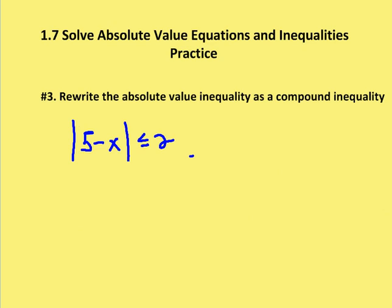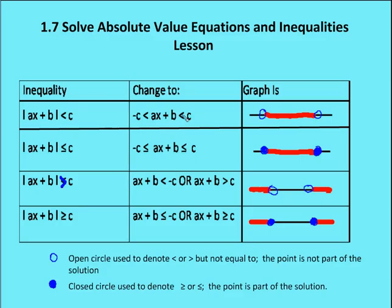In the next problem, we're asked to rewrite the absolute value inequality as a compound inequality. Remember, if it's less than some value, we're going to refer back to our table. If it's less than some value, you know that it's going to be 'and,' so it's going to be in between the negative c and the c values.